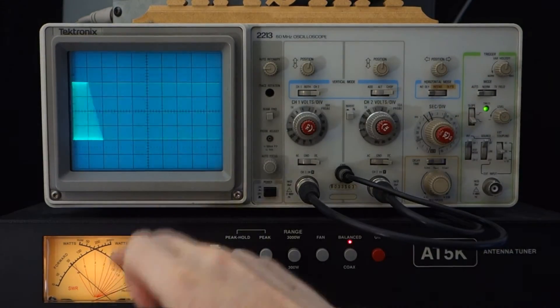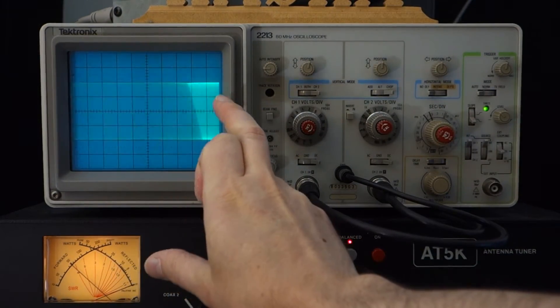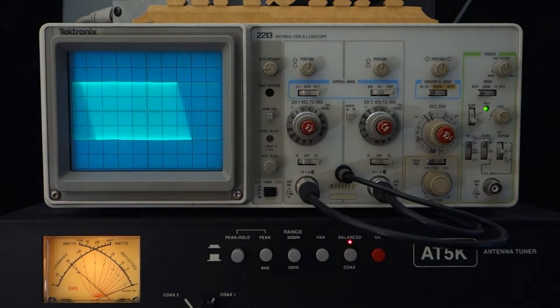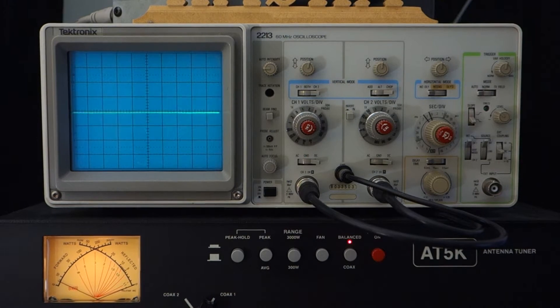So plus or minus two divisions of deflection on the oscilloscope. Now in this reference is a reference to the power level of 50 watts as seen by the wattmeter below.